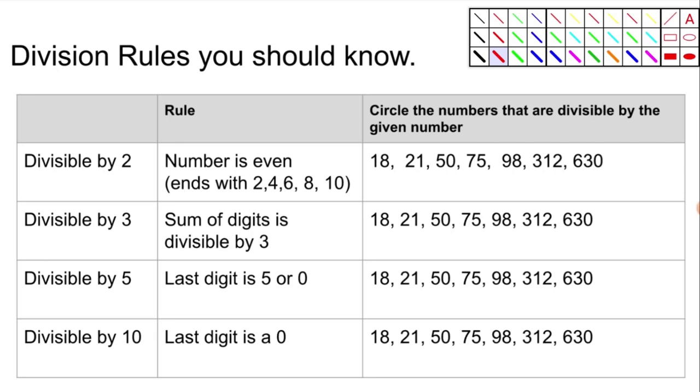Divisible by 2. How do we know if a number is divisible by 2? Well, the rule is the number is even, which means it will end in a 2, 4, 6, 8, or a 0. Let's take a look. 18 ends in an 8. That's even. 21, not even. 50 ends in a 0. Good, not good. Good, good, and good. So real quickly, I know that 18, 50, 98, 312, 630 are all divisible by 2.